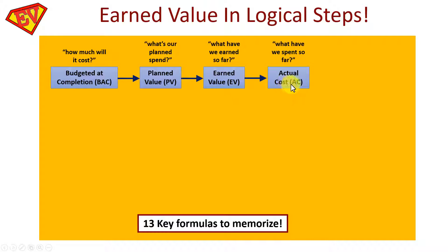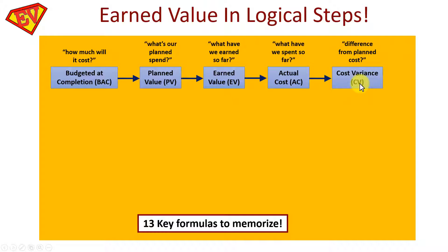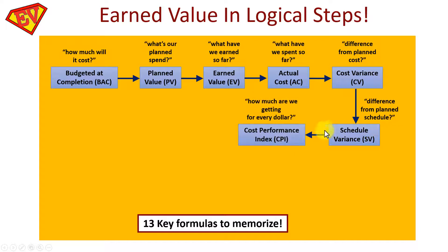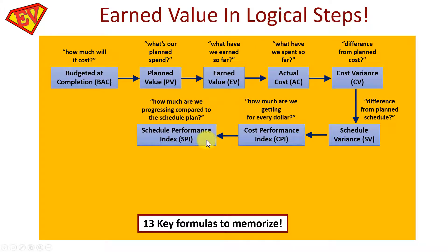Next is Actual Cost (AC): how much have we actually spent. This slide gives you an overview of the steps. Next is the Cost Variance (CV), which is the difference from the planned cost — one of two variances. The second is the Schedule Variance (SV): the difference from the planned schedule. Then there are two performance indices: the Cost Performance Index (CPI), which calculates how much you are getting for every dollar, and the Schedule Performance Index (SPI), showing how much you are progressing compared to the schedule plan.